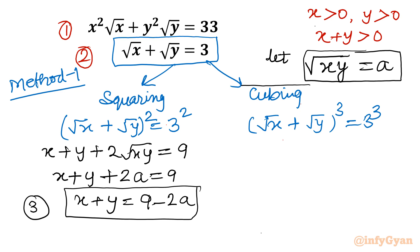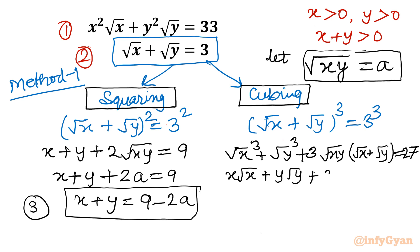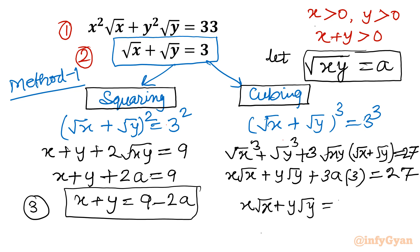Now for the cubing part, using the identity (a+b)³ = a³ + b³ + 3ab(a+b), we write (√x + √y)³ = 27. Expanding: x√x + y√y + 3√(xy)·(√x + √y) = 27. Since √(xy) = a and √x + √y = 3, this gives x√x + y√y + 9a = 27, so x√x + y√y = 27 − 9a. This is equation number 4.